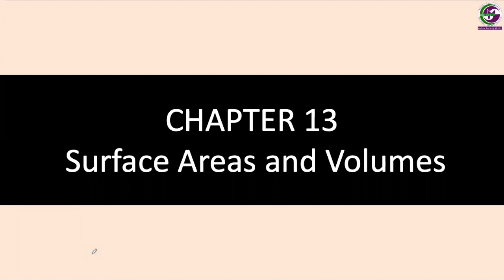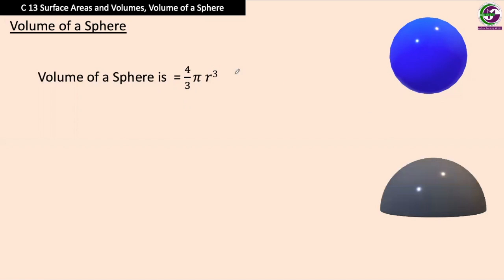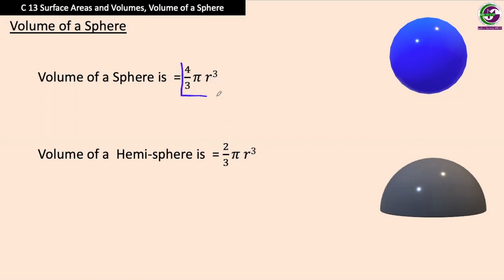Dear students, in the chapter surface areas and volumes, today we will study how to find the volume of a sphere. To find the volume of a sphere we apply the formula 4/3 π r³. This formula is derived using a complicated procedure, so for the time being we can just memorize it. For a hemisphere, the volume will be half of that: 2/3 π r³. The unit will be unit³.